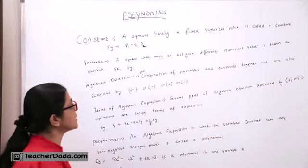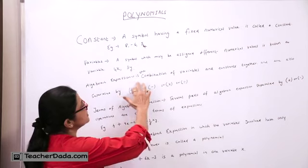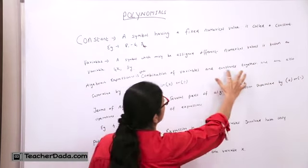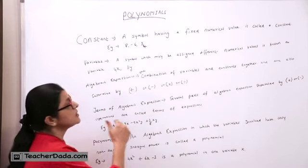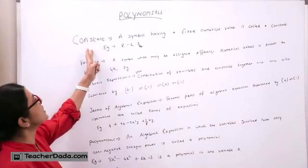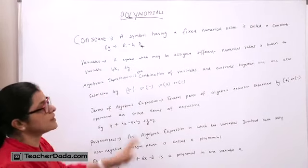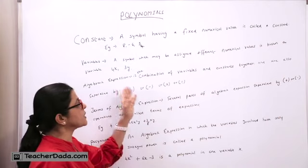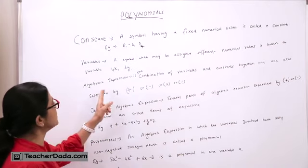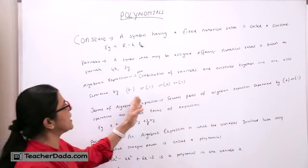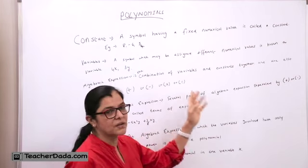Now what is algebraic expression? Algebraic expression is a combination of variables and constant together. Means the constant term and variable together is termed as algebraic expression. But these algebraic expressions are separated by plus or minus or multiplication or division sign.